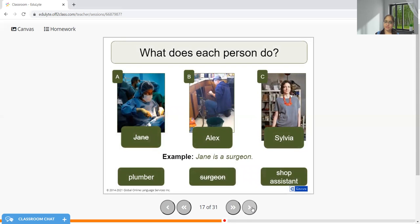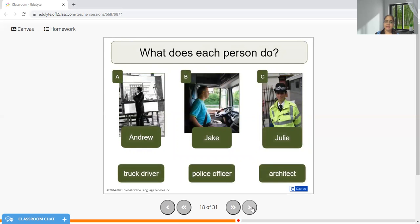Let's talk about professions, because in professions also we need to use 'a' or 'an' sometimes. Jane is a surgeon, Alex is a plumber, Silvia is a shop assistant. Andrew is an architect, Jake is a truck driver, and Julie is a police officer. Did you notice the difference in all three sentences? I'm saying Andrew is an architect because 'architect' starts with A, which is a vowel, therefore I have to use 'an' and not 'a'.